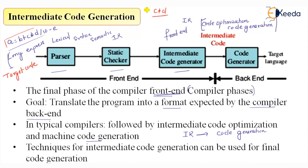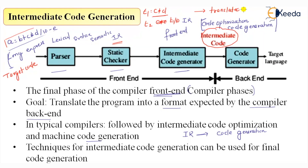We can store the result of C multiplied by D in a temporary variable T1, then handle the division by 10 separately. We have to break the expression down so that it helps in the final generation of our code. This is where intermediate code comes into the picture — it is represented in a format that can be directly translated to target code. That is why intermediate code generation is required.